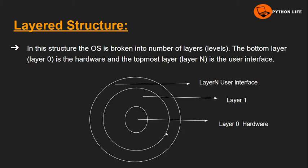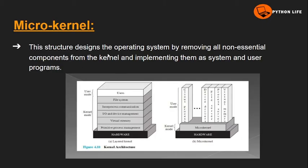The next one is micro kernel structure. This structure designs the operating system by removing all non-essential components. The main purpose of this is to allow a client program to access services by sending a request to the micro kernel. The micro kernel provides communication between the client program and system services, communicating directly with the help of message passing.